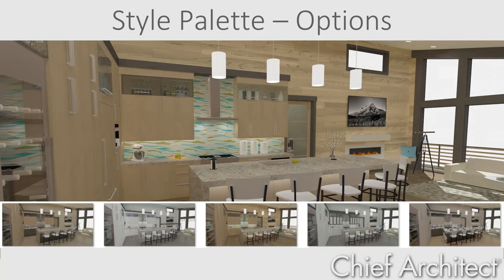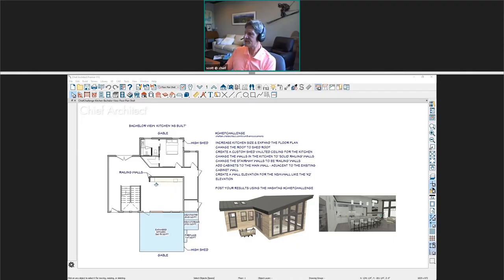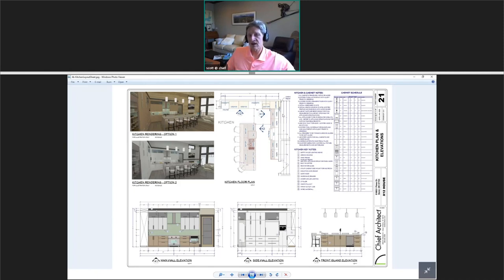I hope you found the kitchen remodeling session valuable. We've posted the Chief Challenge file so you can repeat these steps and share your results on social media using the hashtag Chief Challenge. That wraps up the seminar. Here's the completed layout: I took a couple renderings and pushed them out to a 24 by 36 layout sheet. A layout sheet in Chief Architect is where you organize your drawings. I included the floor plan view with dimensions, the different elevations with dimensions cleaned up, the island, and the cabinet schedule.